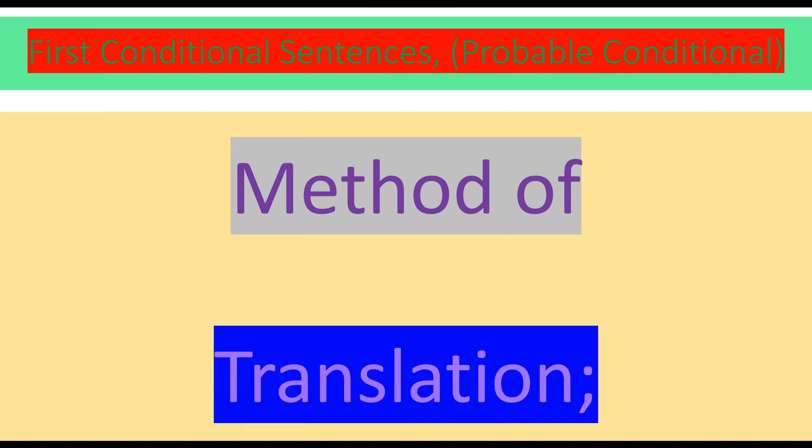Today we are going to learn about first conditional sentences, which are also called probable conditional. Earlier we learned about zero conditional sentences in our very first lecture about conditional sentences, and now we are going to learn first conditional sentences, which are called probable conditional.